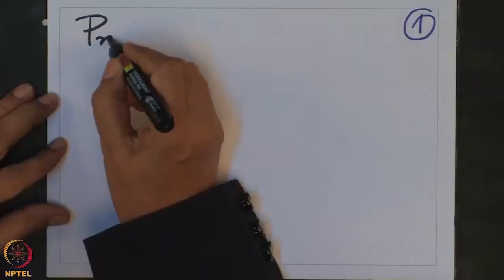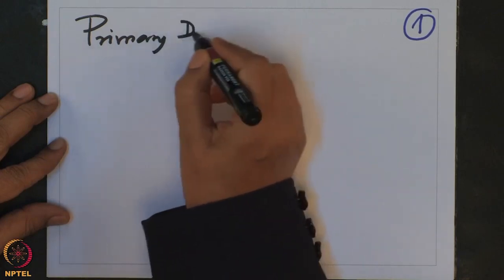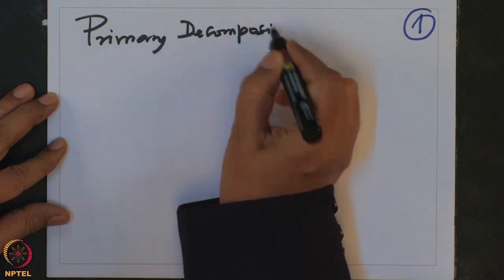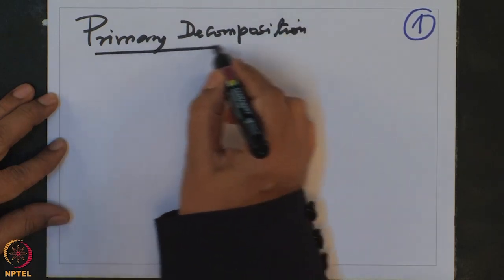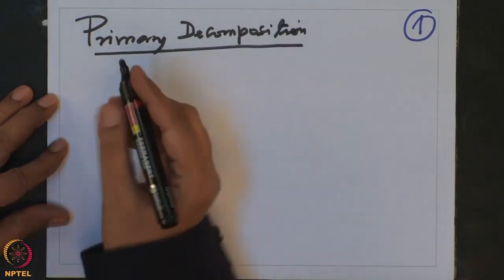So now in this lecture, after discussion with the associated prime support, we will come to what is called primary decomposition. This is a generalization of a prime decomposition, as we will see once we have defined it precisely.